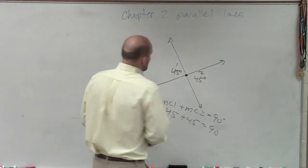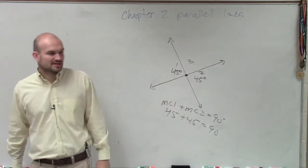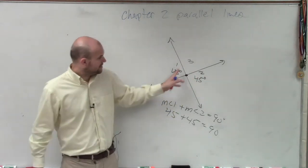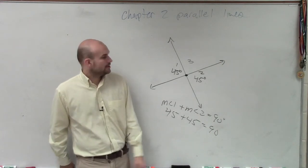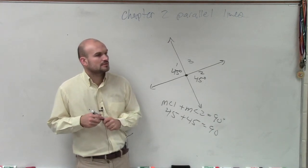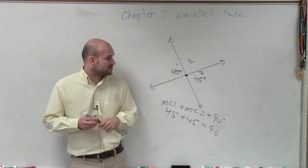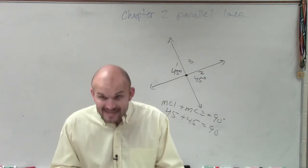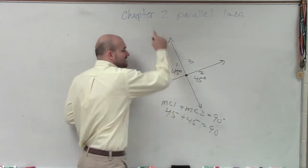Anyways, let's do angle 3, just because I want you guys to think. If this is 45 degrees, what would you say about angles 1 and 3? What kind of angles are those? There are a couple of names we've used today. They're adjacent, right? Why are they adjacent? Because they share the same vertex, they share the same common point, and they share the same side.